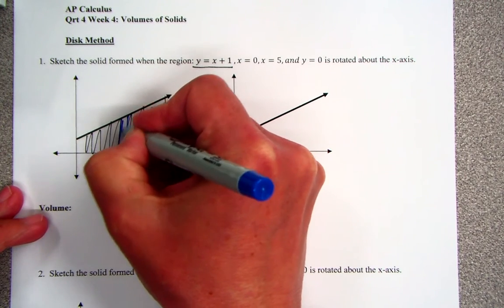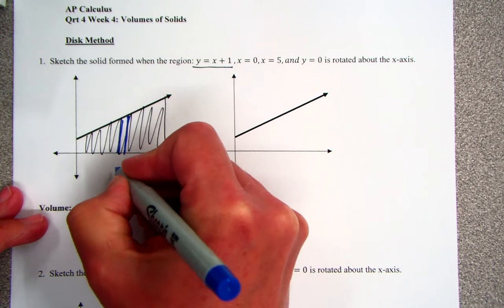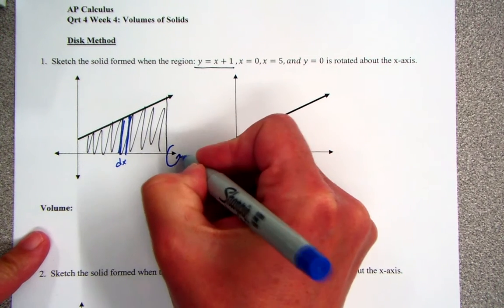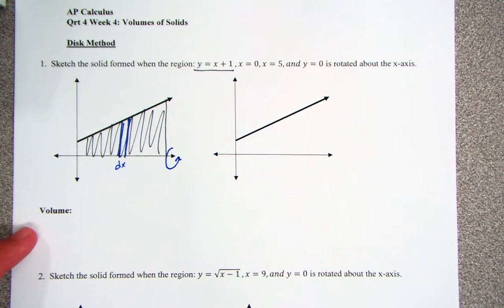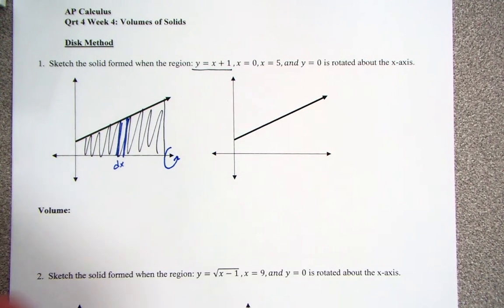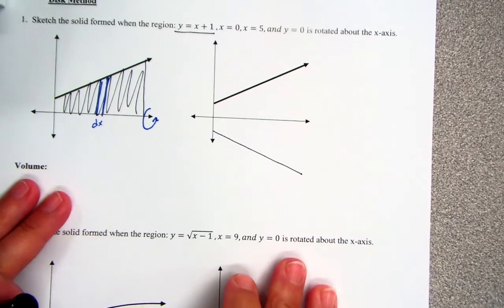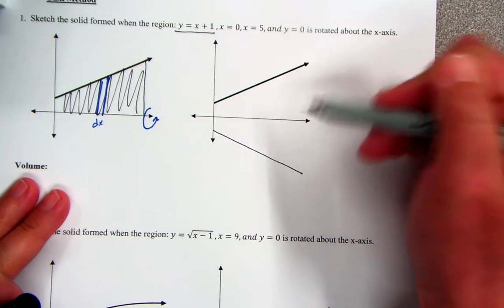And we said this rectangle had a thickness of dx. Well, what we're going to do now is rotate this around the x-axis. So this line is now going to be the outside edge. So it's going to come down in this area. And so that's my line that's been flipped around.